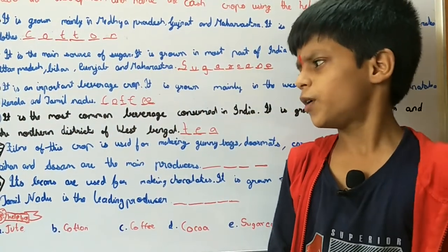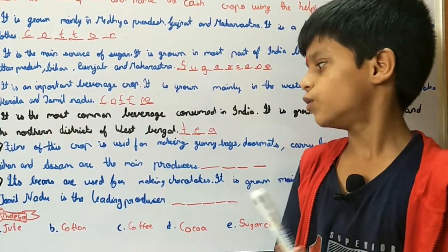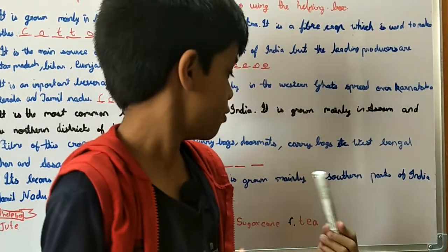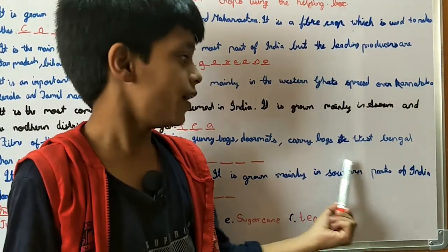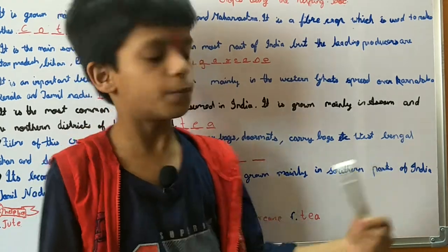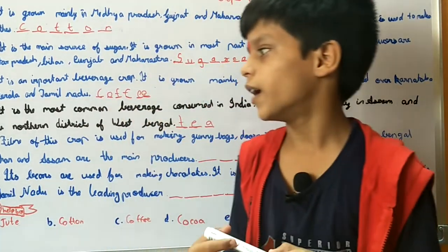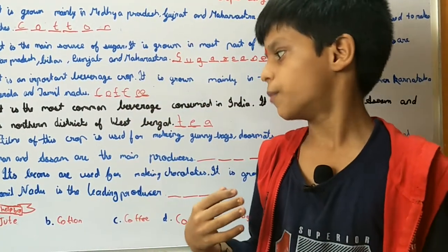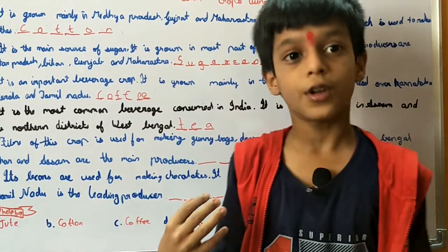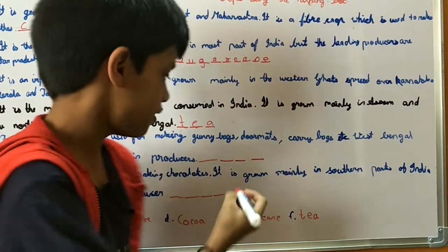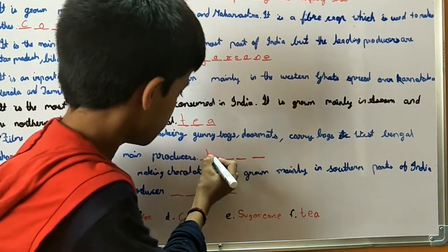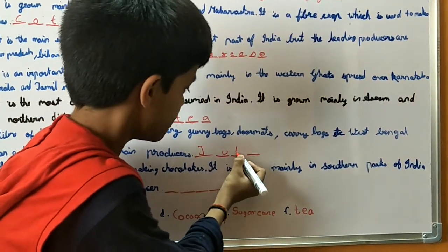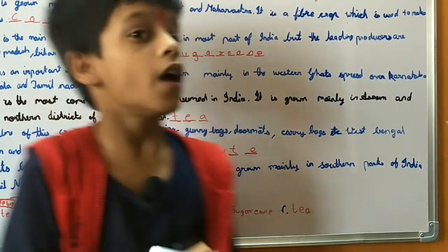Number 5: Fiber of this crop is used for making gunny bags, doormats and carry bags, etc. West Bengal, Bihar and Assam are the main producers. So friends, the answer is Jute.